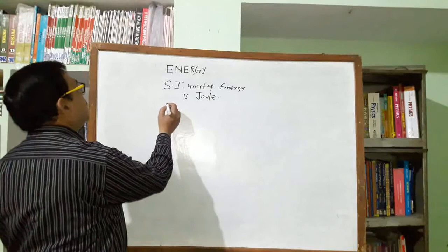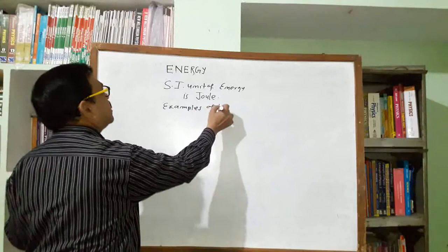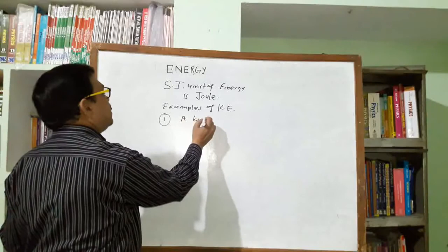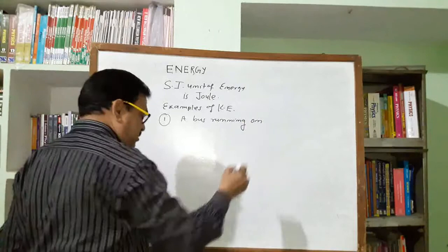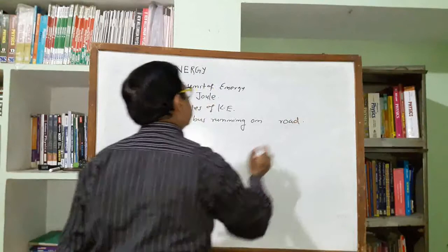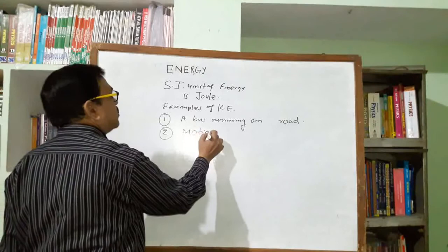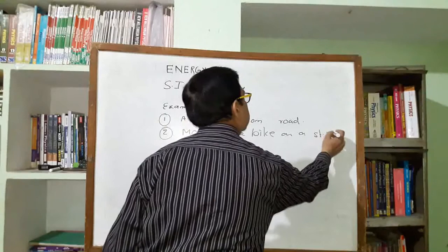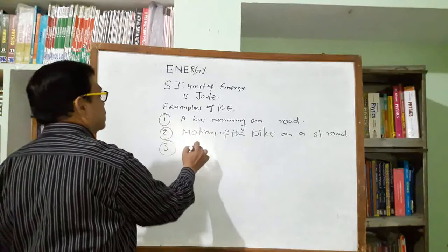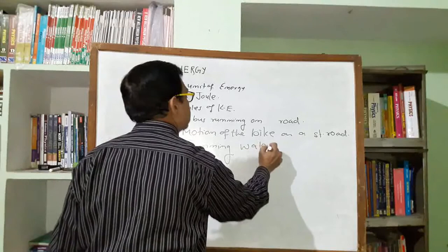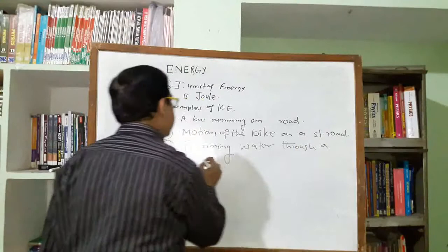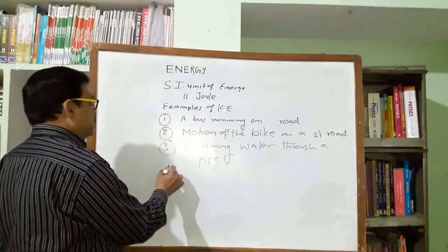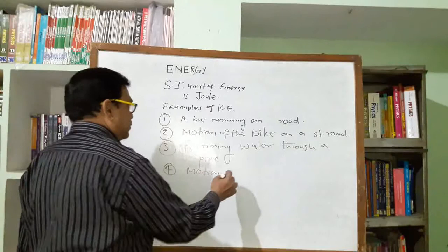There are many examples of kinetic energy. Number one: a bus running on a road. Number two: motion of a bike on a straight road. Number three: running water through a pipe. Number four: motion of any object.